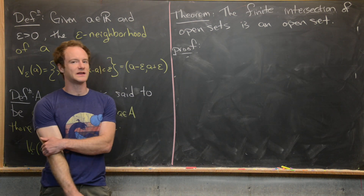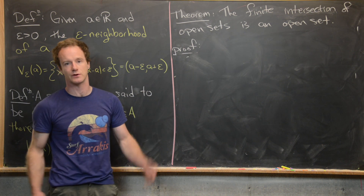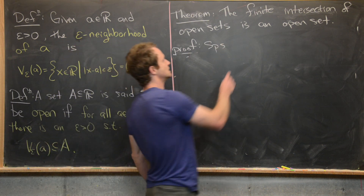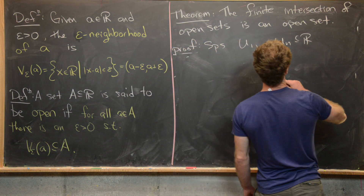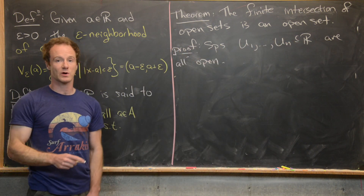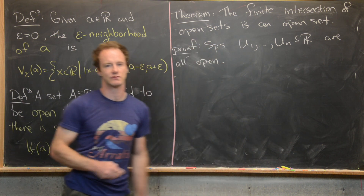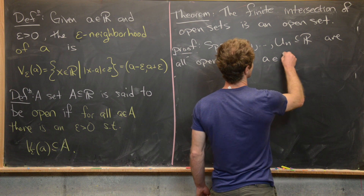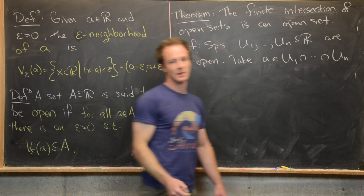Now we look at a companion result: the finite intersection of open sets is also an open set. Suppose we have a finite collection of open sets U_1 through U_N, all subsets of R and all open. We want to show their intersection is open. So we take some arbitrary element a from the intersection U_1 ∩ ... ∩ U_N.